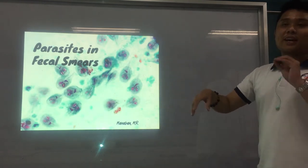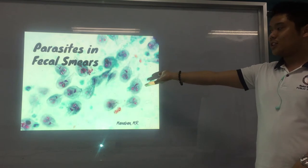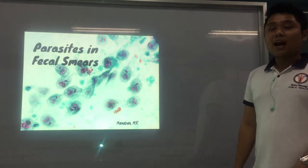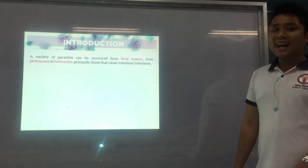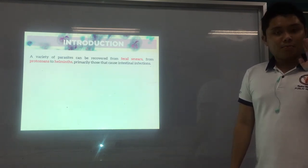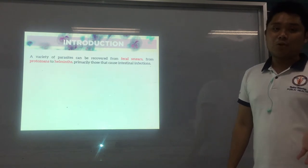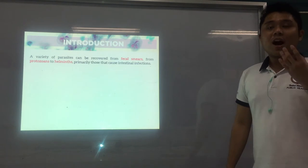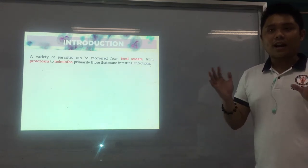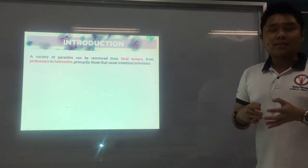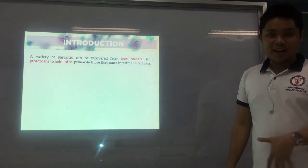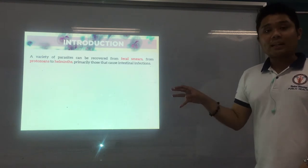We're going to talk about the parasites in fecal smears, focusing on the helminths or the worms. The parasites we can obtain from our fecal smears are those that affect your intestines — those causing intestinal disorders. There are some parasites that can be seen in fecal smears if the infection is already disseminated, but primarily the parasites we can really obtain are those causing disease in your intestines or digestive tract. That is the focus of this lecture.